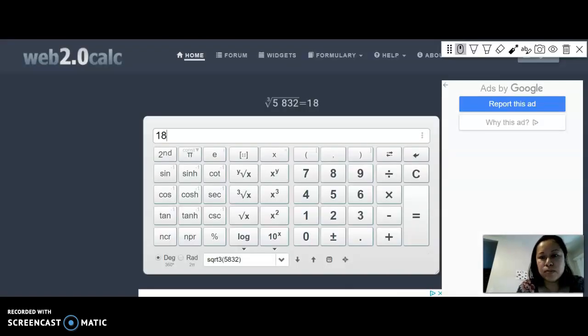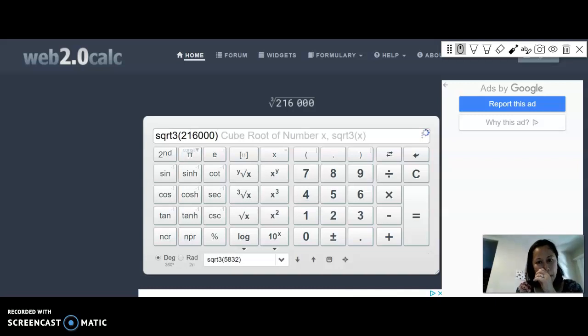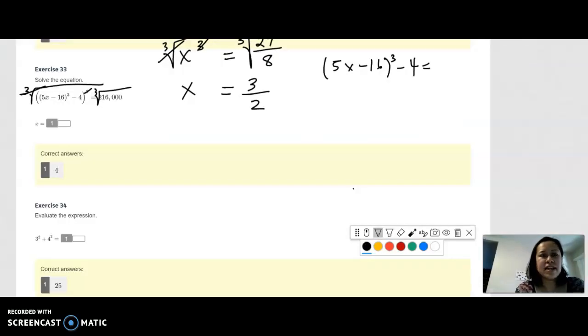Your calculator to cube root 216,000. Okay, 216,000 cube root, and then we're going to get 60.